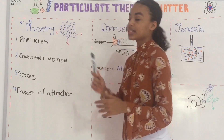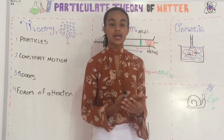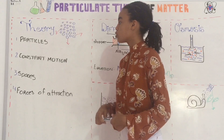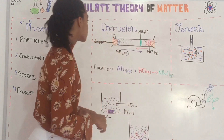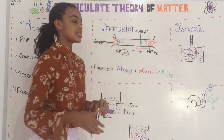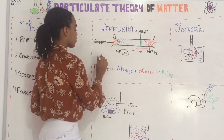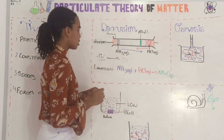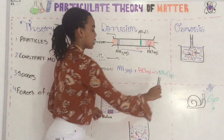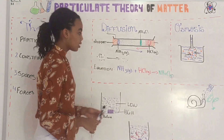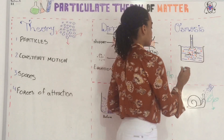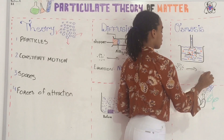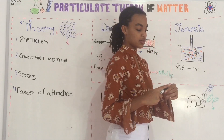So let's recap briefly. The particulate theory of matter: matter is anything that has mass and volume. The particulate theory of matter says that matter is made up of particles, these particles are in constant motion, they have spaces between them, and they have forces of attraction between them. Diffusion is the process by which particles move from a region of high concentration to a region of low concentration until evenly distributed. We have a reaction between ammonia and hydrogen chloride to give ammonium chloride. Also, osmosis is the movement of water molecules from a region of high concentration to a region of low concentration through a semi-permeable membrane until evenly distributed.